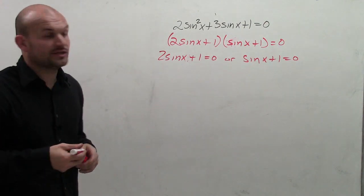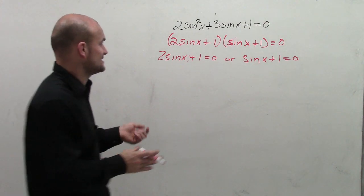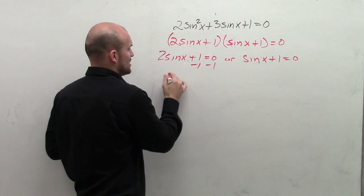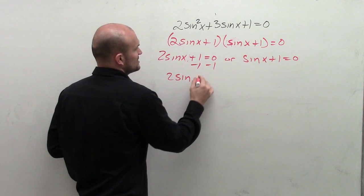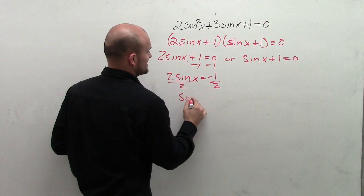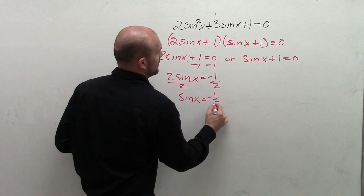So now what we need to do is we just want to solve for each one of these cases. To solve for sine of x, I'm going to subtract 1. So then I have 2 sine of x equals negative 1. Then I divide by 2, and I get sine of x equals negative 1 half.